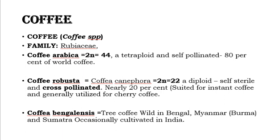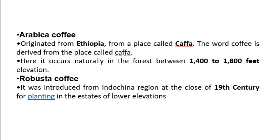The third species is Coffee bengalensis, or tree coffee, which is wild in Bengal, Myanmar and Sumatra and occasionally cultivated in India. The family of coffee is Rubiaceae. Coffee arabica originated from Ethiopia, from a place called Kaffa, where it grows naturally in forests between 1400 to 1800 feet elevation. Coffee robusta was introduced from the Indochina region at the close of the 19th century for planting in states at lower elevations.